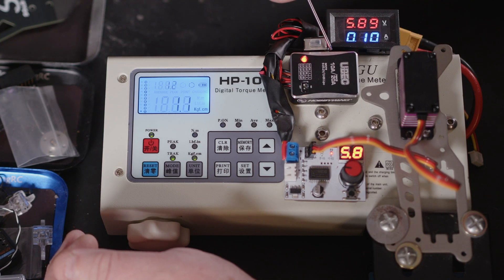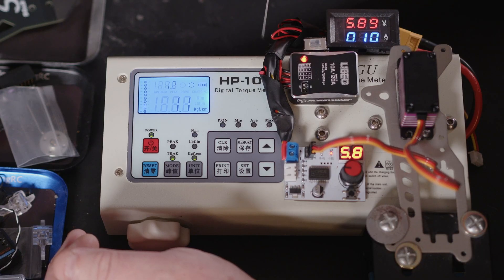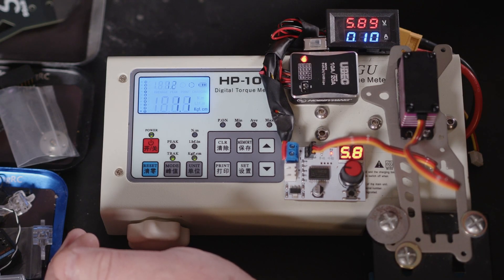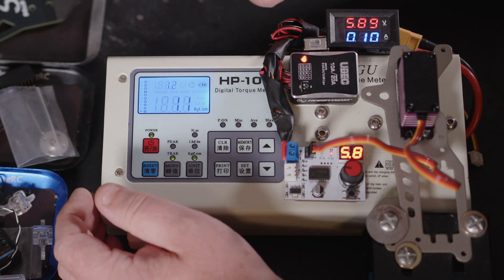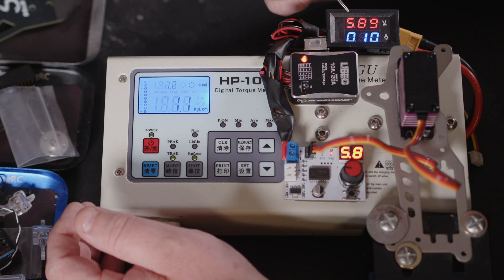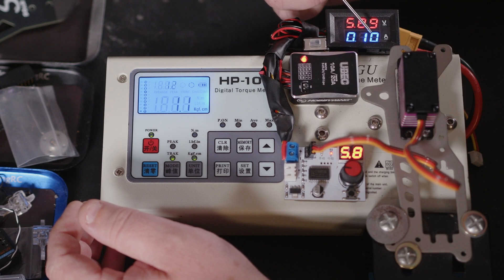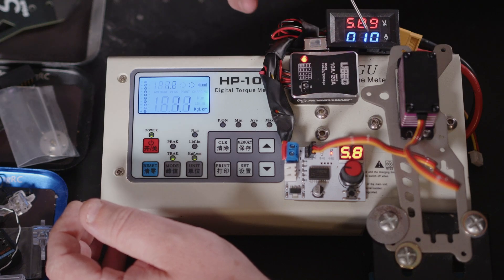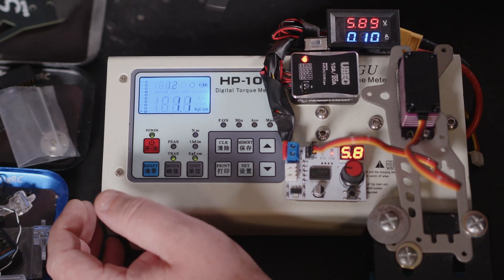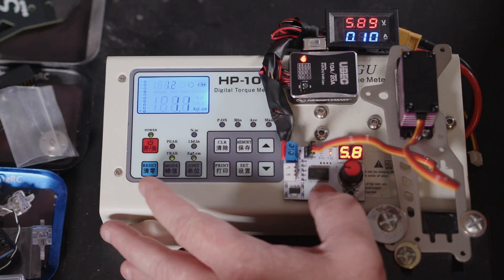First things first, we're going to try it at 6 volts, or as close as this BEC can muster. I have checked the battery I'm running it off, that is charged, so at least we can get some sort of idea of what power we're getting out of this.